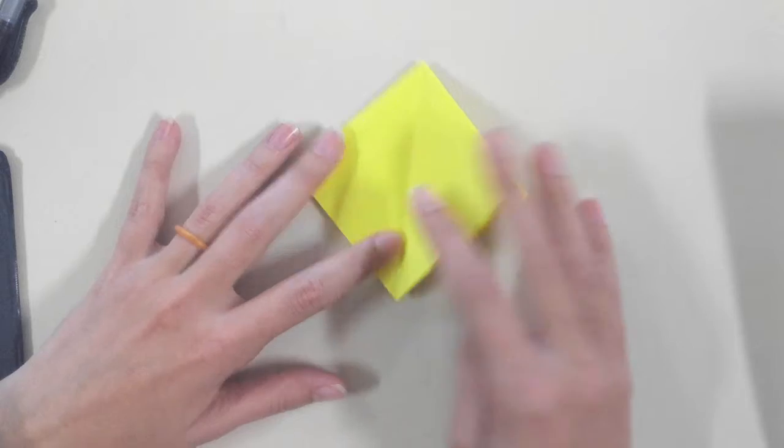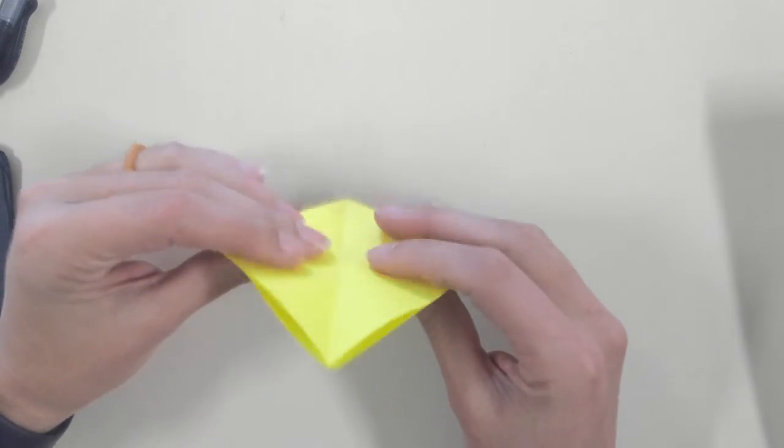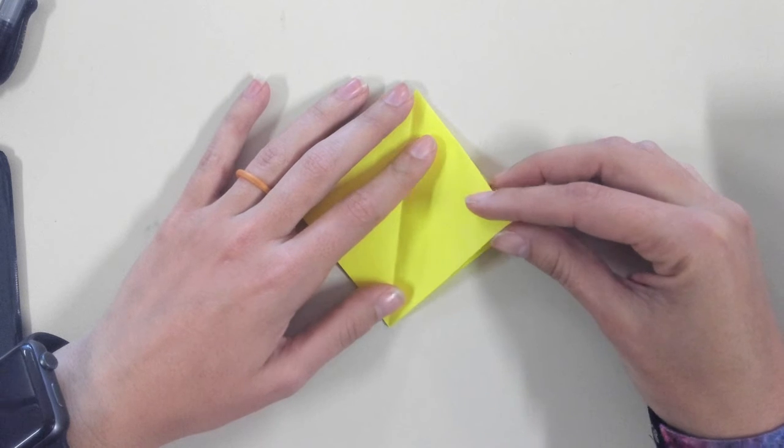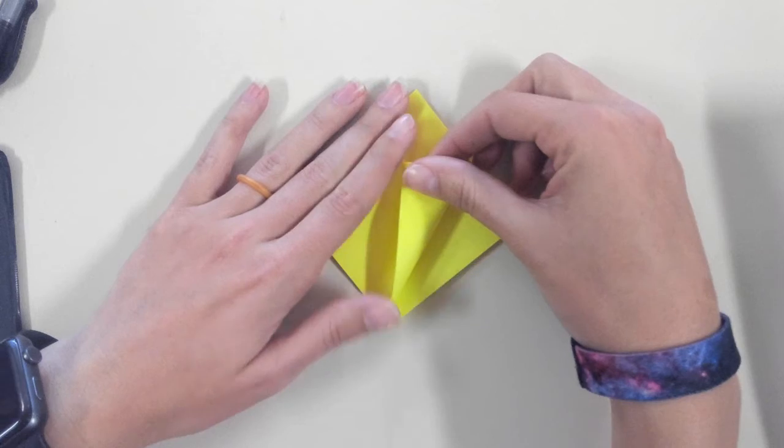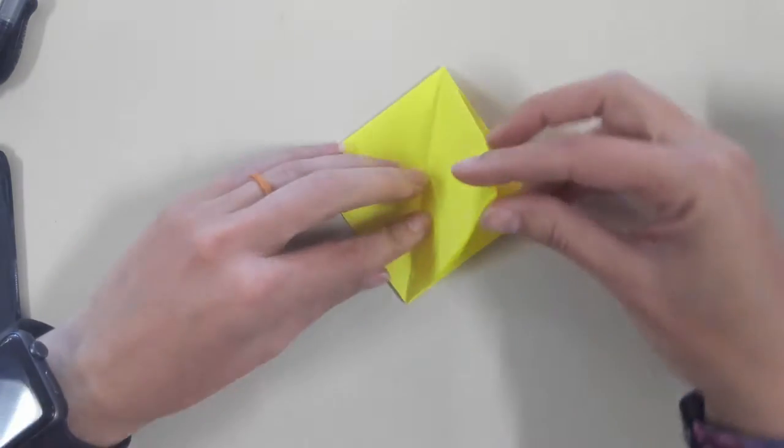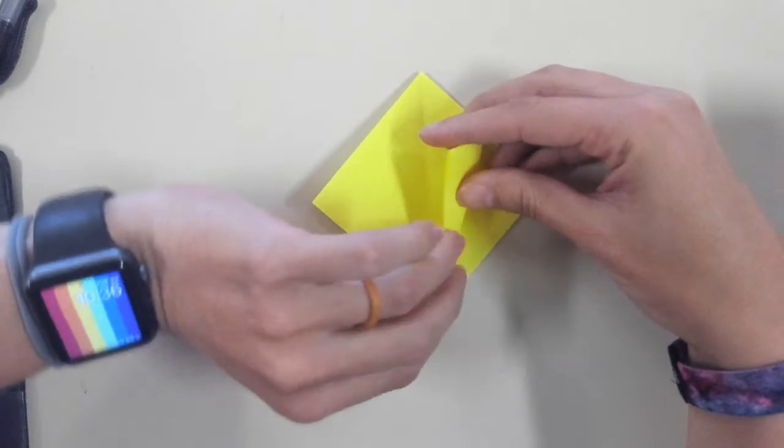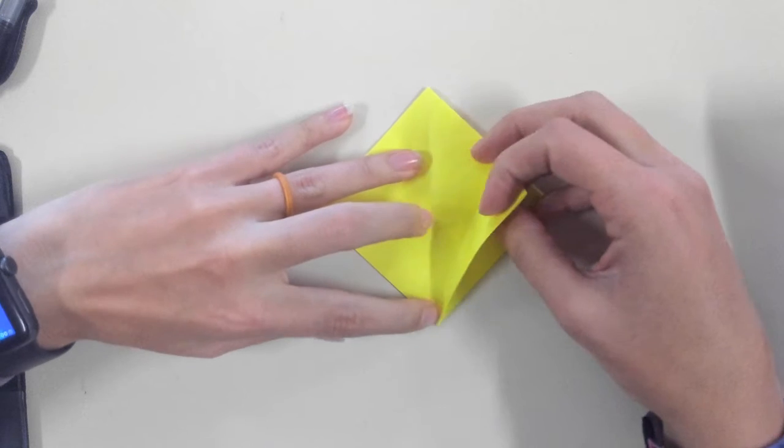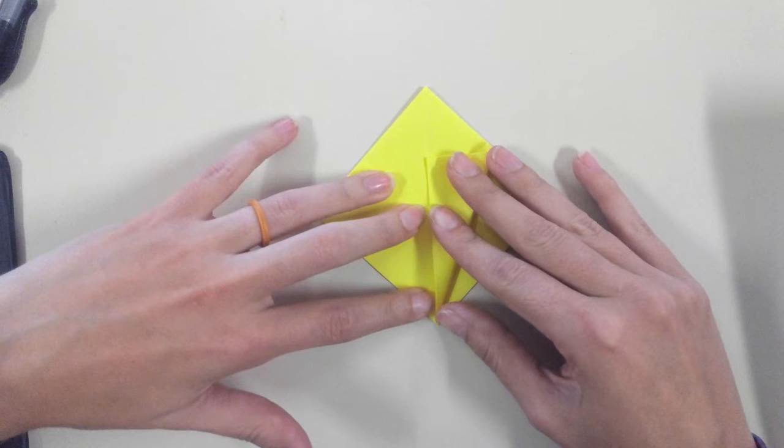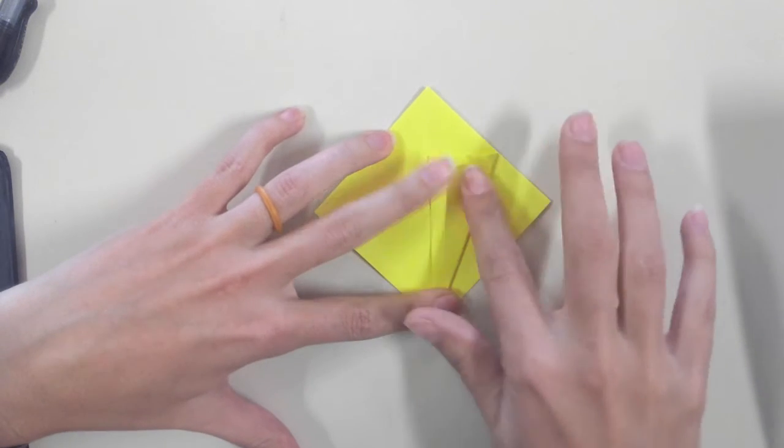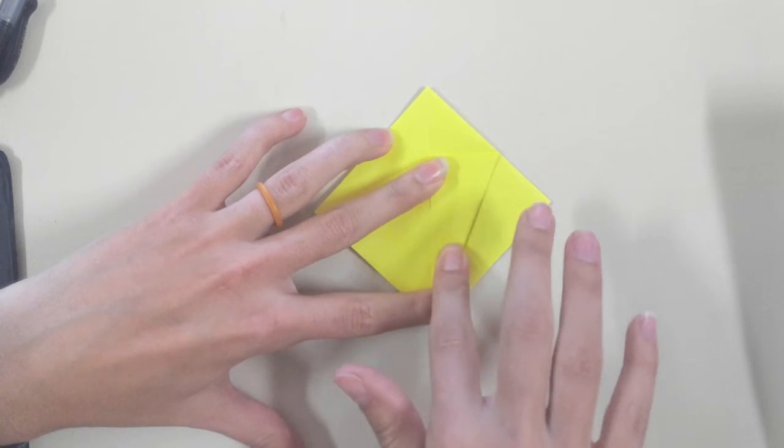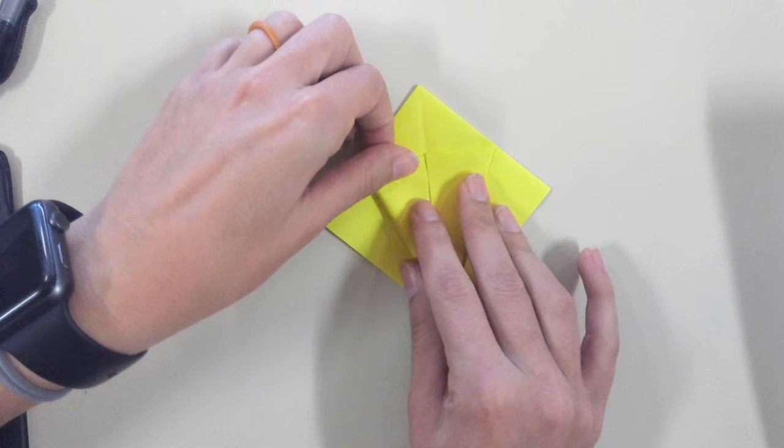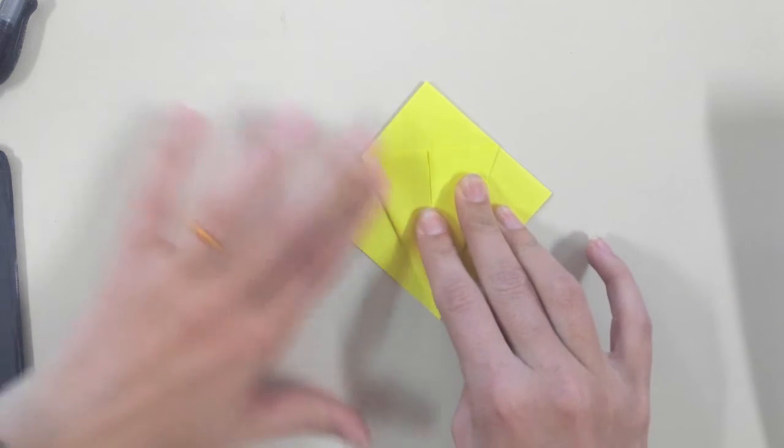It helps if you keep the same orientation that I'm using. Next step. You're going to take this part, just the top layer. And again, the mouth is at the bottom. Make sure your folded part's at the top. Just the top layer. And you're going to fold it into the middle. Same with this one. Fold it in. Kind of like a kite.